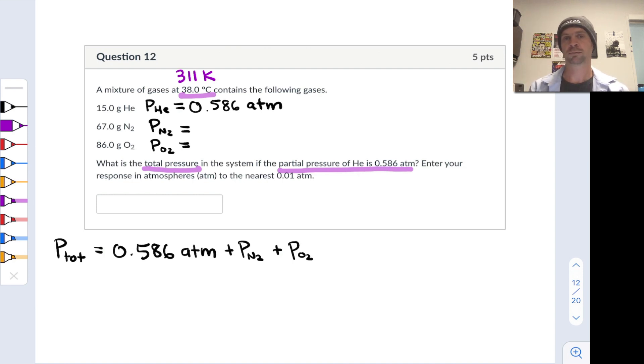Something that's going to help us is to keep in mind that, similar to Avogadro's law, pressure and number of moles are in a constant ratio when volume and temperature are held constant. So the ratio of the partial pressure of helium to the number of moles of helium applies to the other two gases inside this container.